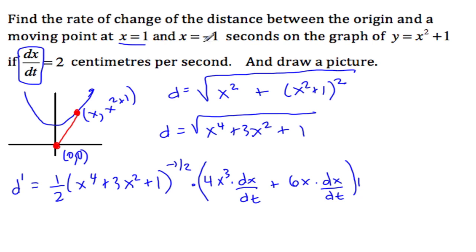And I'm only going to do it for x = 1. You can do it for x = -1. So I just substitute in 1 and 2 when it's applicable. So 1⁴ is 1 plus 3 plus 1. So 1 + 3 + 1 = 5 to the -1/2. So that's 1/(2√5). 1 × 4 × 2 + 6 × 2, and this is all multiplied.